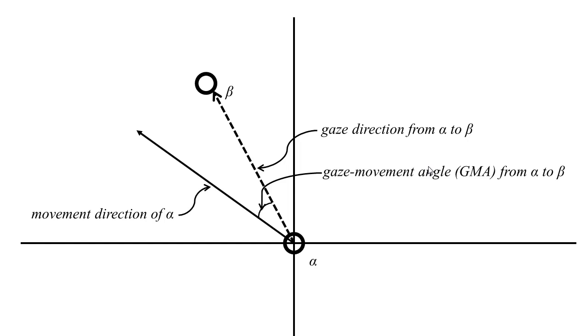The GMA corresponds to the difference between the angle of movement direction and the angle of the gaze direction. The gaze angle corresponds to the direction of the other pedestrian from the observer. We defined the pedestrian with the smaller GMA as the observing pedestrian and the other one with the bigger GMA as the observed pedestrian.